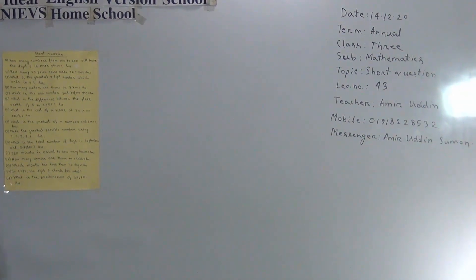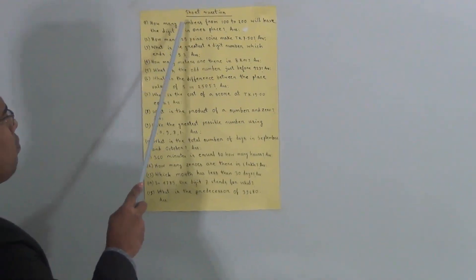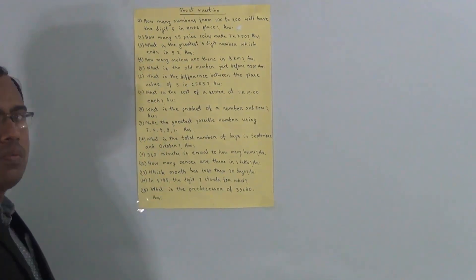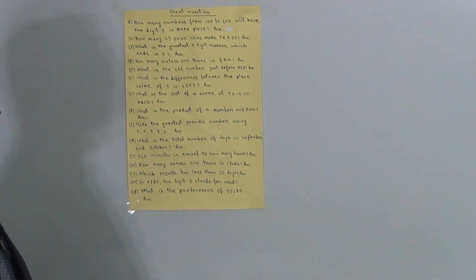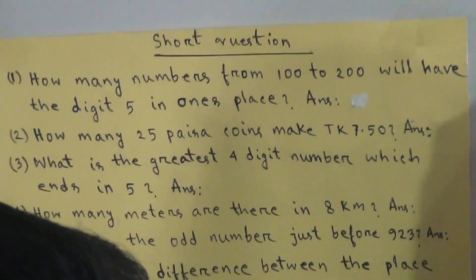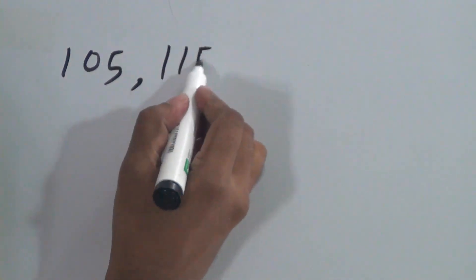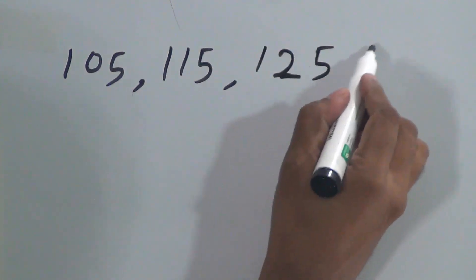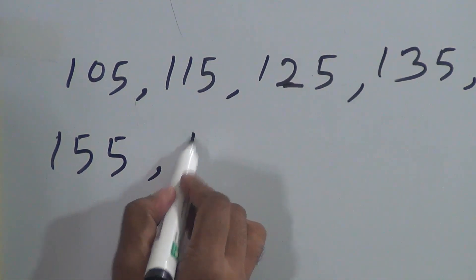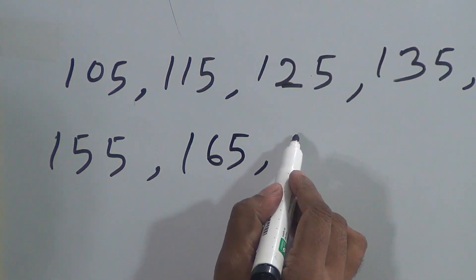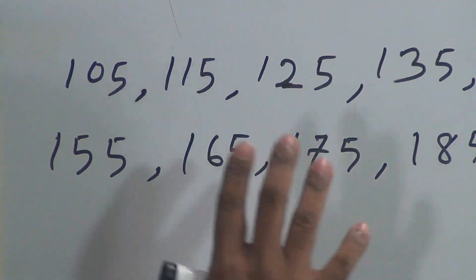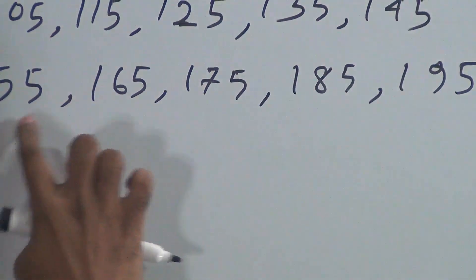Let us start. First question: how many numbers from 100 to 200 will have the digit 5 in the ones place? The numbers greater than 100 and less than 200 whose ones place is 5 are: 105, 115, 125, 135, 145, 155, 165, 175, 185, and 195.